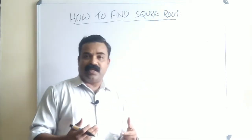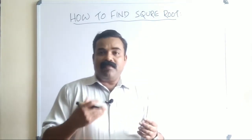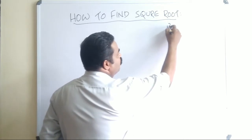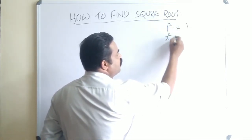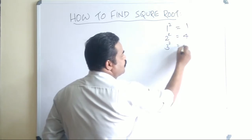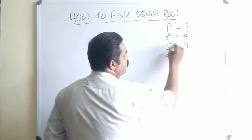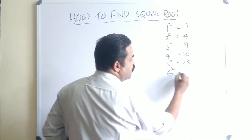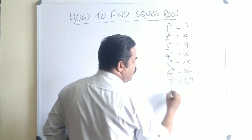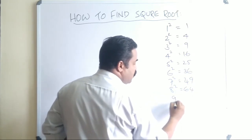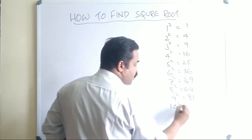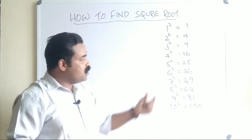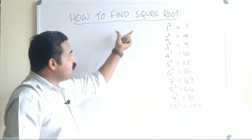Before going to any examples or questions, let me give you some patterns. We know: 1² = 1, 2² = 4, 3² = 9, 4² = 16, 5² = 25, 6² = 36, 7² = 49, 8² = 64, 9² = 81, and 10² = 100. Everybody knows this, but there is a pattern in it that we need to find out. If you know the pattern, it is easy to find the square root of any number.